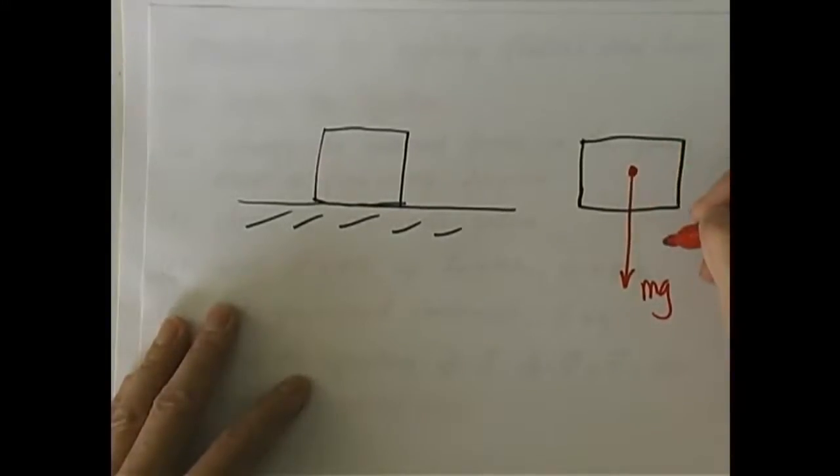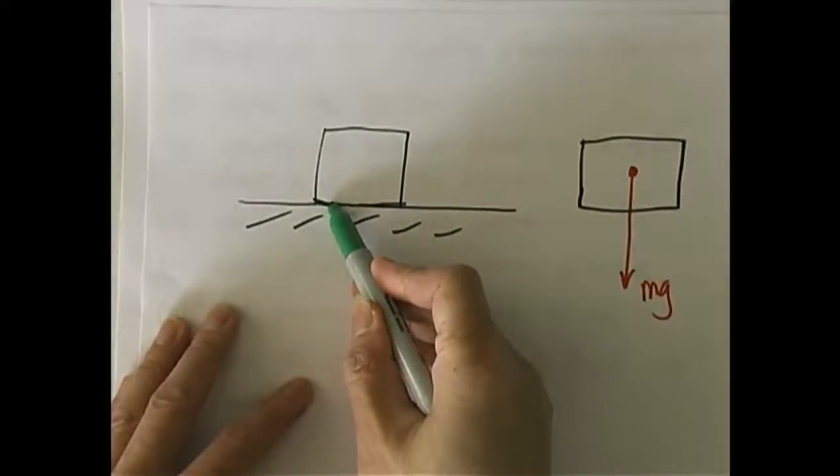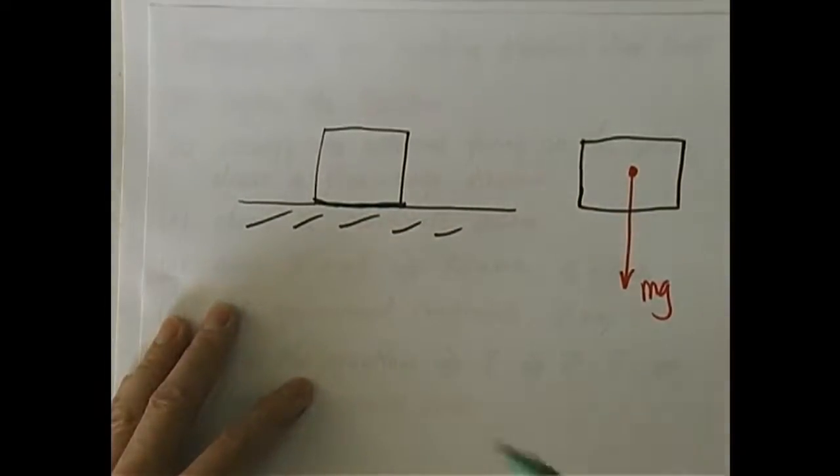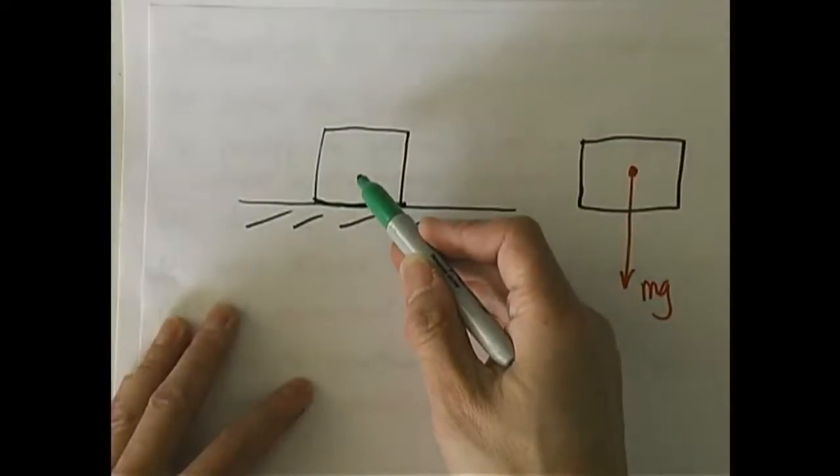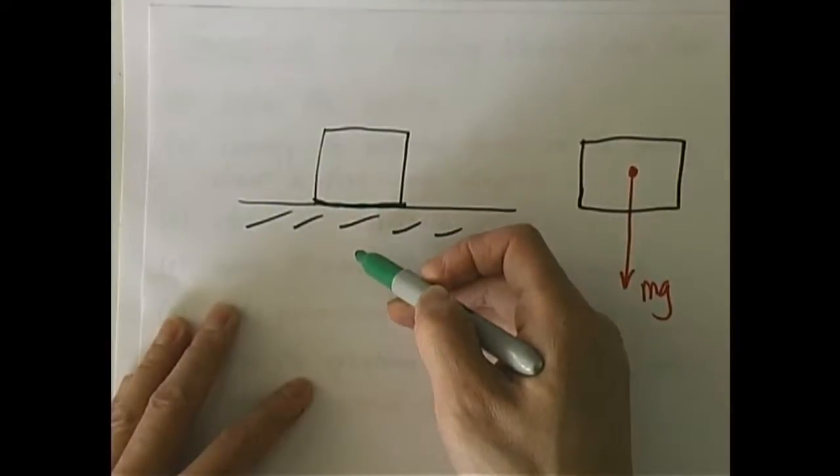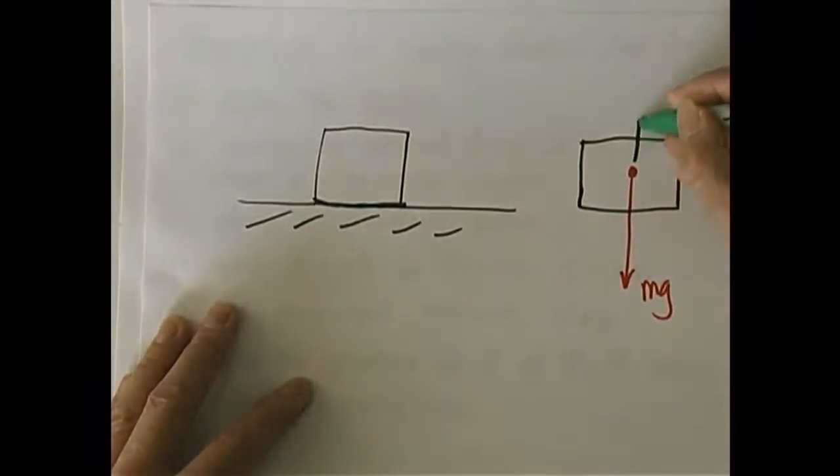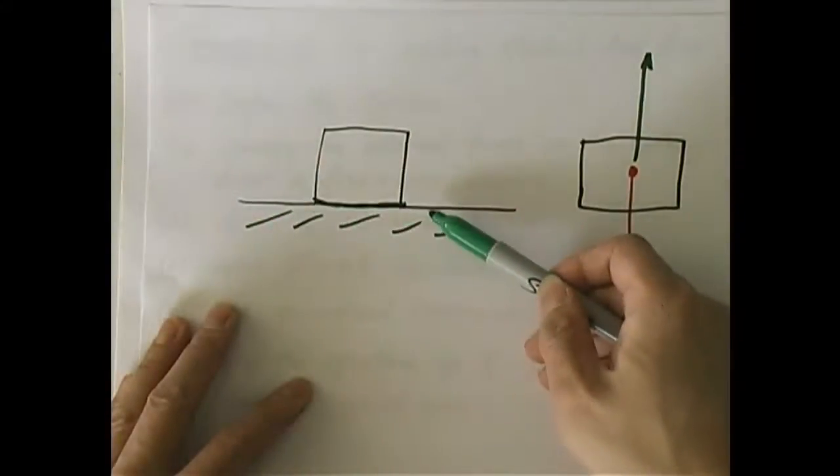That is the only non-contact force. Now, what about contact force? Contact force means that force can only be there if the object makes physical contact with the outside world. The object is in contact with the outside world only through the bottom. It's in contact with the table. And therefore, there is a contact force between the box and the table. That force is a supporting force pushing it up.